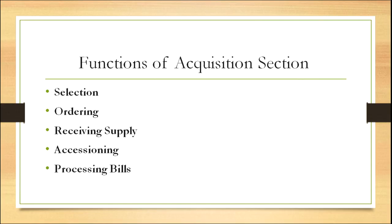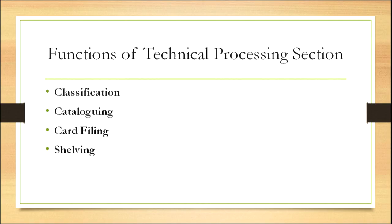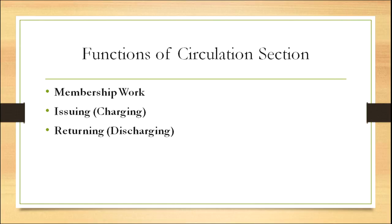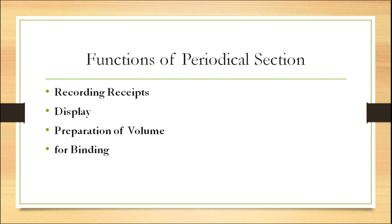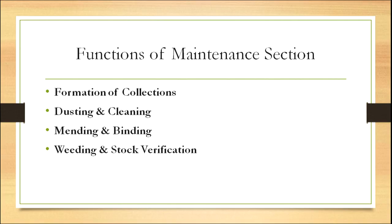To summarize the functions of each section: Administration and financial section handles record and file keeping, diary and dispatch, allocation and expenditure, stock registers and caretaking of library property. Acquisition section handles selection, ordering, receiving, supply and processing bills. Technical processing handles classification, cataloguing, card filing and shelving. Circulation section handles membership, issuing and returning. Reference section handles collection formation and answering queries. Periodical section handles recording, receipt, display and preparation of volumes for binding. Maintenance section handles collection organization, dusting and cleaning, mending and binding, weeding and stock verification.